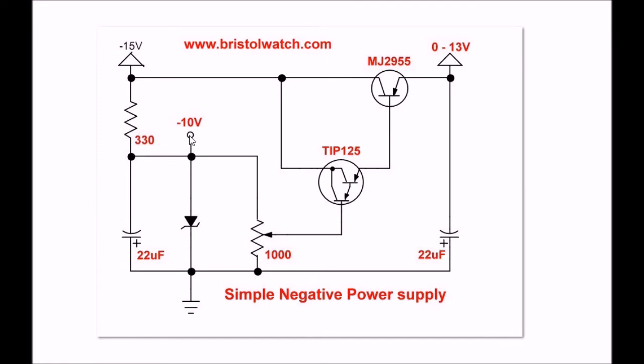This forms a largely stable minus 10 volt reference, which is connected to a 1000 ohm potentiometer. The potentiometer wiper goes to a TIP125 PNP Darlington transistor.